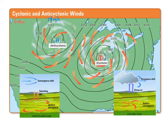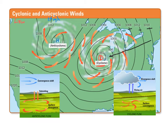On our map we have all these different lines — these are our isobars, showing areas where pressure is the same. Notice that pressure decreases toward the low and then increases back up to the high. We can see pressure going down here to a low and then an increase coming back up to the high.